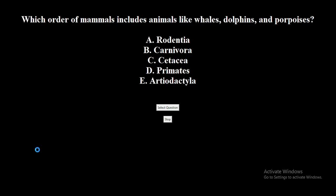Which order of mammals includes animals like whales, dolphins, and porpoises? A. Rodentia. B. Carnivora. C. Cetacea. D. Primates. E. Artiodactyla. The correct answer is Cetacea.